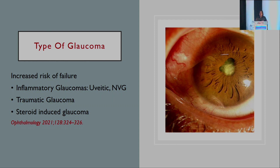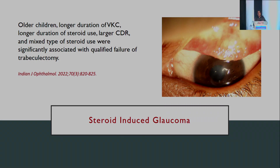Certain types of glaucoma, by virtue of being more inflammatory, compromise postoperative outcome: uveitic glaucoma, neovascular glaucoma, traumatic glaucoma, and even steroid-induced glaucoma increase the risk of failure post-trabeculectomy. Steroid-induced glaucoma is far more common than we see, because in many rural and semi-urban areas steroids are prescribed — not just by doctors but also by chemists. Older children with long-duration vernal keratoconjunctivitis, or those on long-duration steroids with larger cup-disc ratios and mixed steroid use, have been found significantly associated with qualified trabeculectomy failure. We must evert the lids of younger glaucoma patients and dig out the history of prior steroid use.